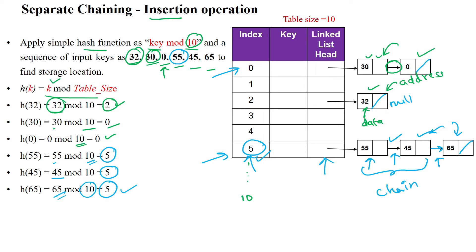The end node in each linked list will have a null value in its address field, since there is no next node. For example, node 55 holds the address of 45, and 45 holds the address of the next node. This is how separate chaining works using the linked list concept by forming chains. Thanks for watching.